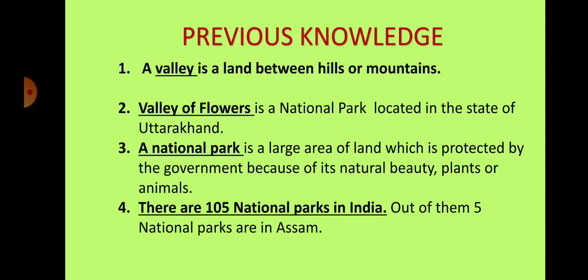Before starting today's class, let us quickly revise what you have learnt in the previous class. In our last class, you learnt that a valley is a land between hills or mountains. Valley of Flowers is a national park located in the state of Uttarakhand. A national park is a large area of land which is protected by the government because of its natural beauty, plants, or animals. There are 105 national parks in India, and out of them, five national parks are in Assam.